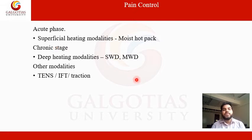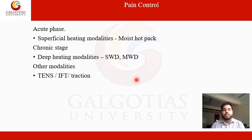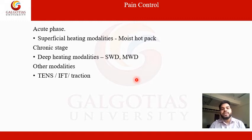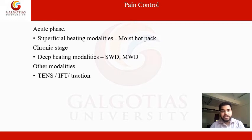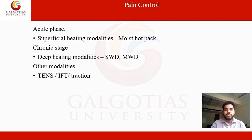For pain control: superficial heating modalities such as a moist hot pack are very beneficial for the stiff joint, applied during morning or evening sessions. In the chronic stage, deep heating modalities like shortwave diathermy (SWD) or microwave diathermy (MWD) are used. Other modalities like TENS, IFT, and traction can also be used for pain control, improving blood circulation and neuromuscular facilitation.